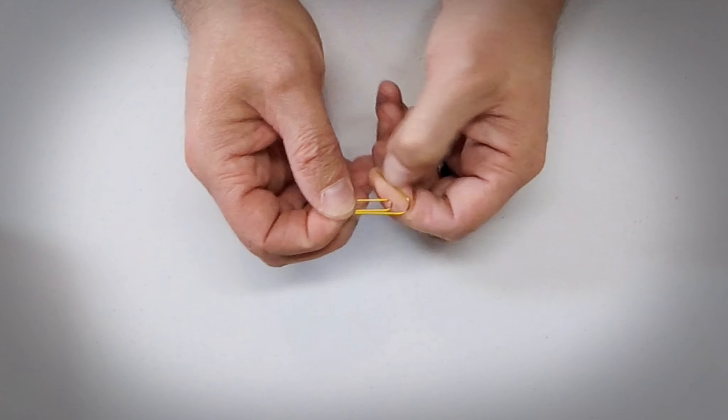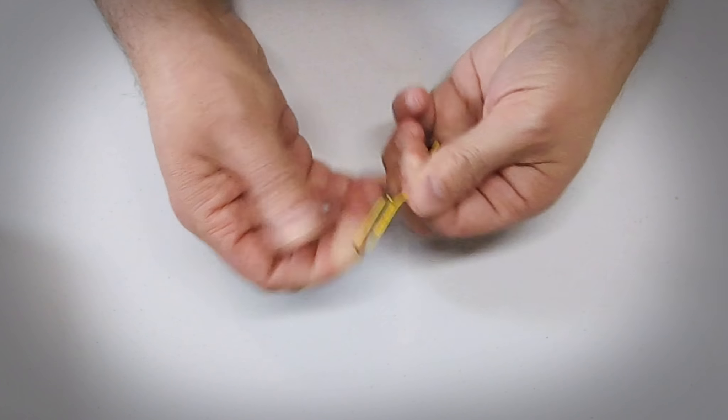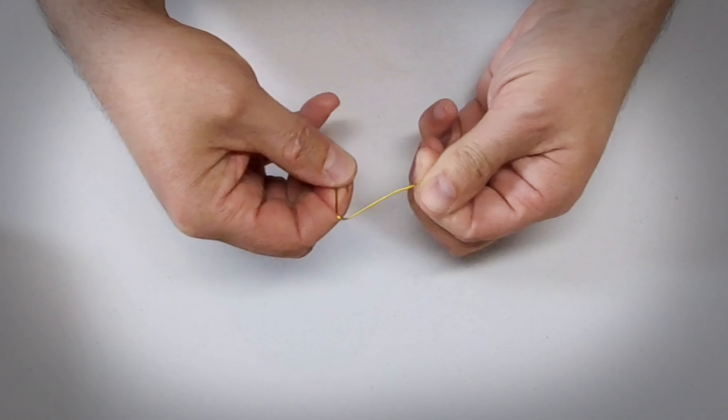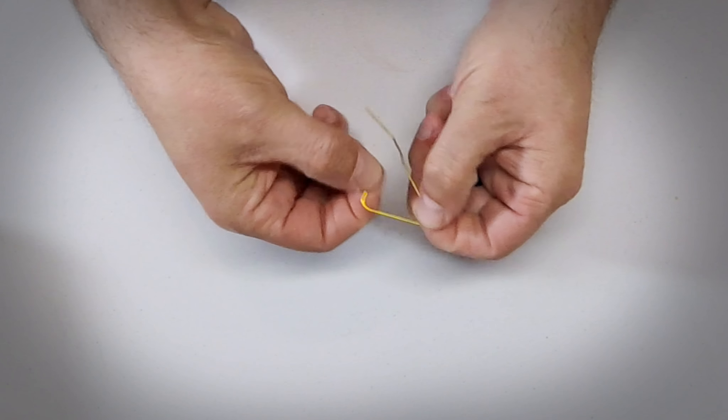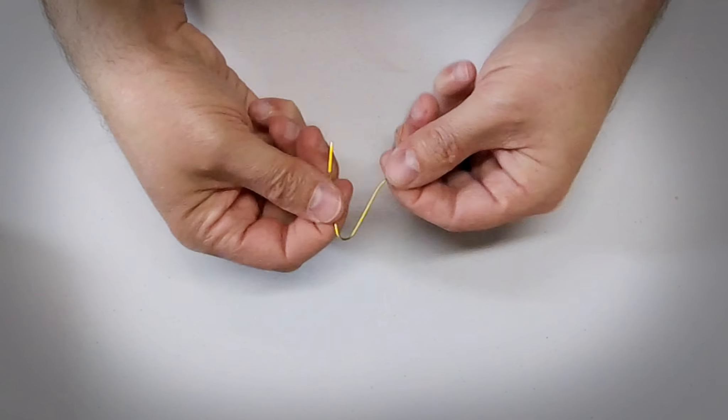All right. First things first, you want to unbend the paper clip at the outermost edge. So you just do once there, and then you do another one on the other side. So this is going to leave you with one end longer than the other end.